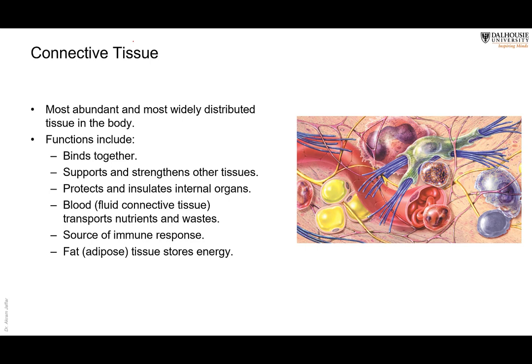As the name indicates, connective tissue binds together, supports, strengthens, and protects. It also insulates. Blood is a fluid type of connective tissue — it transports nutrients and excretory waste materials. It's also a source of immune response, and fat or adipose tissue stores energy.